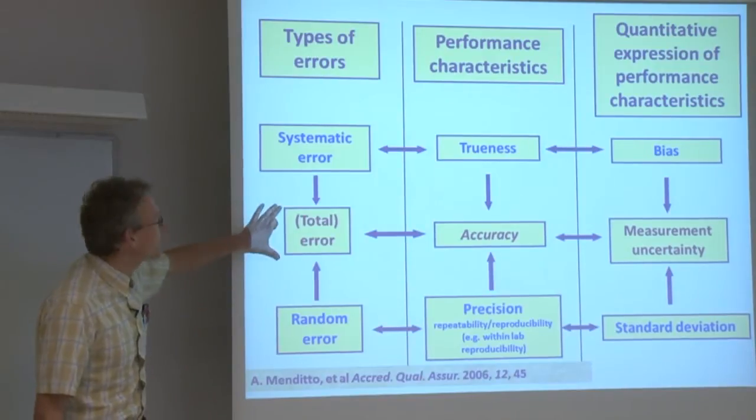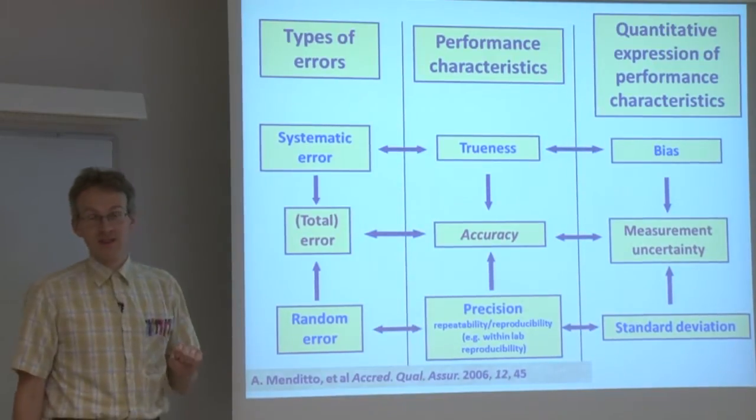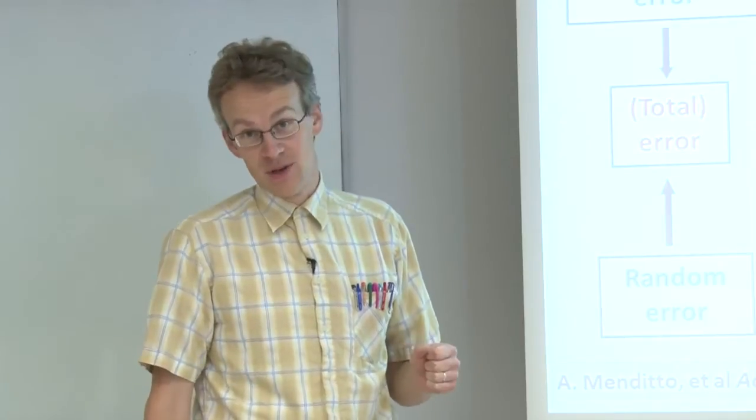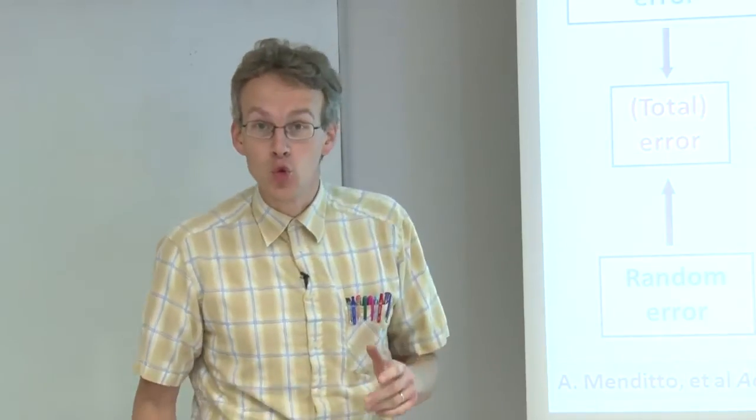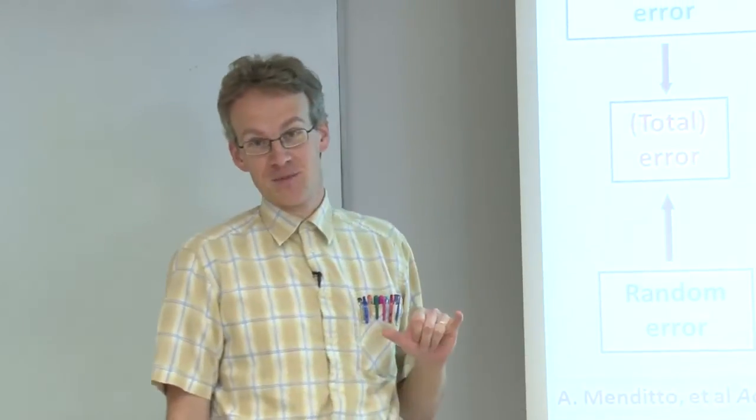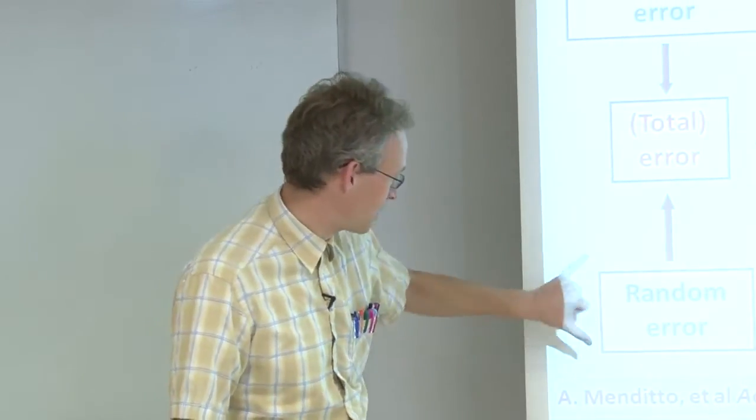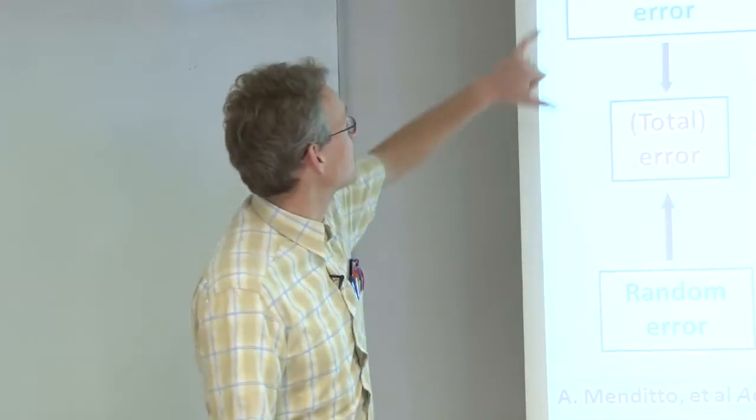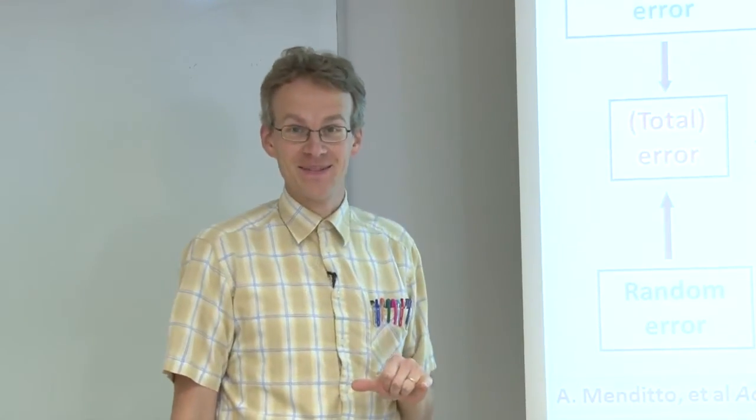the total error or simply the error of the analysis or measurement can be viewed as composed of random and systematic error, whereby random error accounts for the random effects and systematic error for the systematic effects.